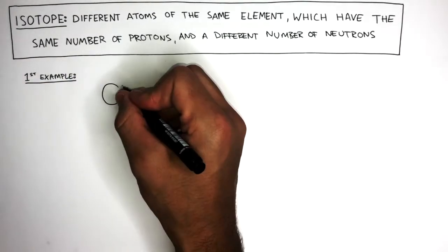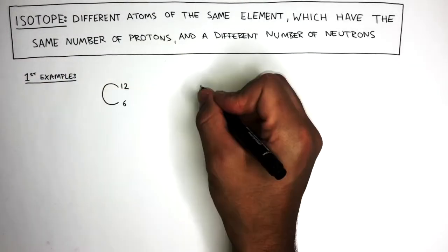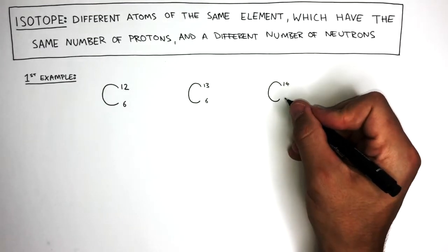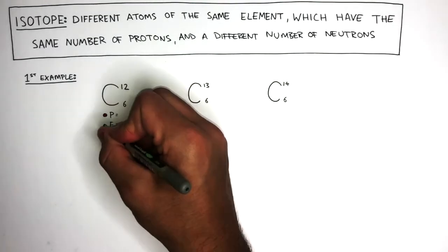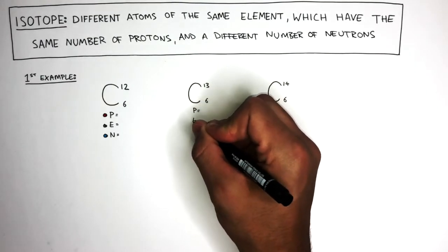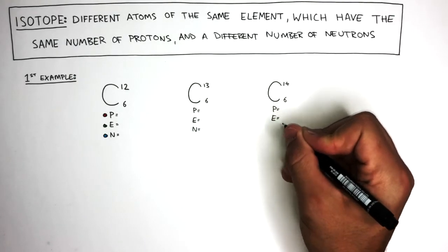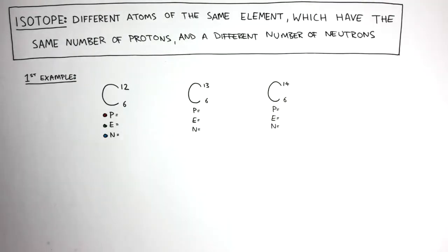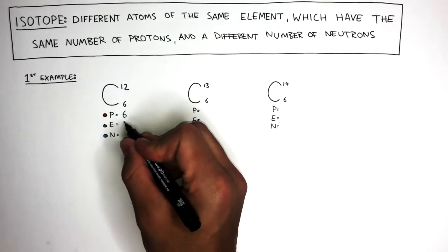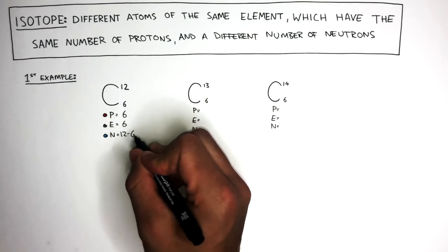Carbon-12, because it has a mass number of 12, carbon-13, and carbon-14. Underneath each isotope, P represents protons, E represents electrons, and N represents neutrons. Carbon-12 has 6 protons, 6 electrons, and 6 neutrons.